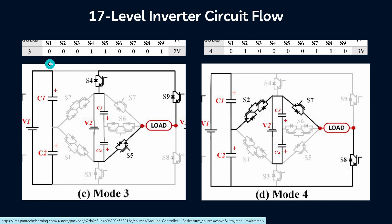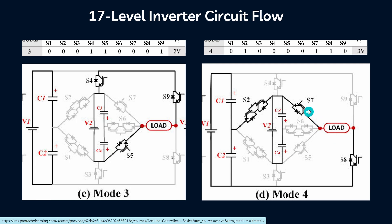In mode 3, S4, S5, and S9 are ON. At that time, the voltage level will be varied. In mode 4, S2, S7, and S8 are ON — 3 devices are ON. Like this, for all modes, the voltage level will be increased.